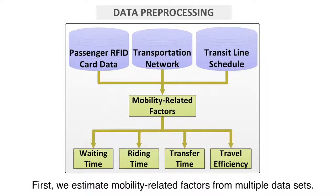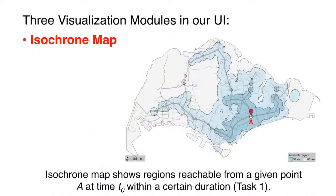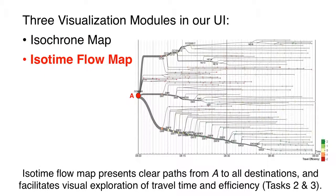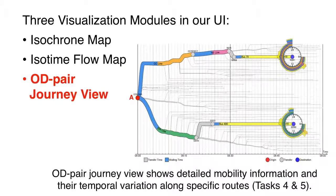First, we estimate mobility-related factors from multiple datasets. There are three visualization models in our UI. The isochron map shows regions reachable from a given point A at time t0 within a certain duration, addressing Task 1. The isotime flow map presents clear paths from A to all destinations and facilitates visual exploration of travel time and efficiency, addressing Tasks 2 and 3. The OD pair journey view shows detailed mobility information and their temporal variations along specific routes, addressing Tasks 4 and 5.